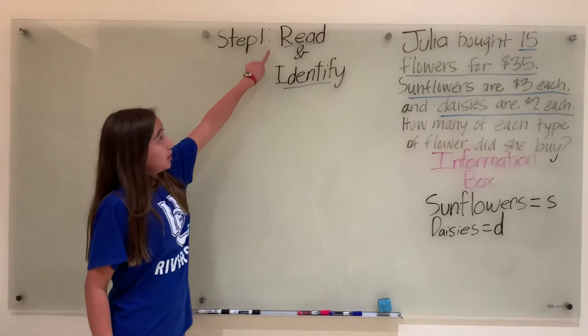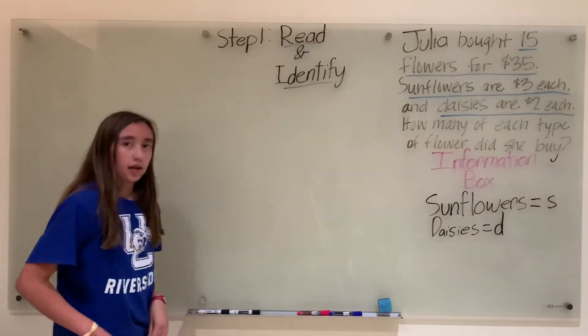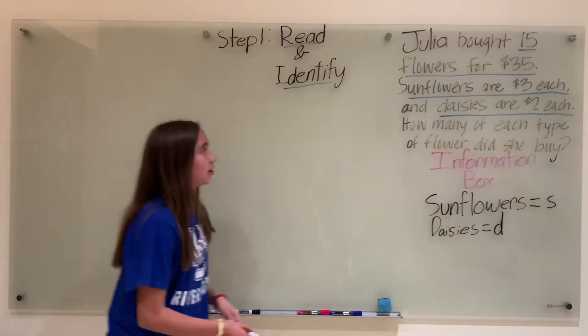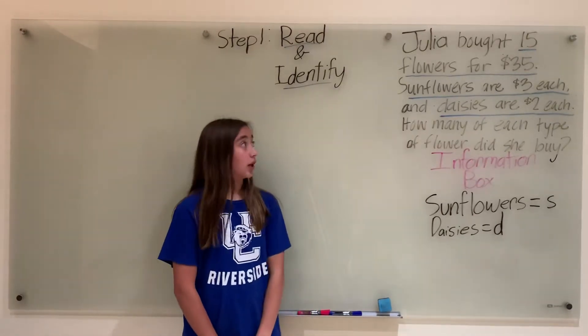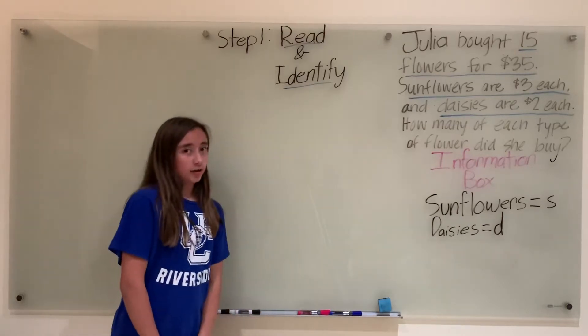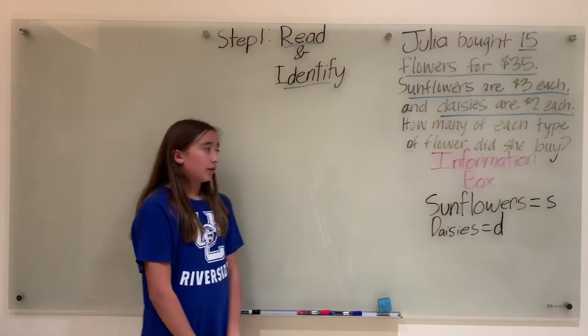Step one, read the problem and identify what our variables mean and our system of equations. So to start us off, Julia bought 15 flowers for $35. Sunflowers are $3 each and daisies are $2 each. How many of each type of flower did she buy?